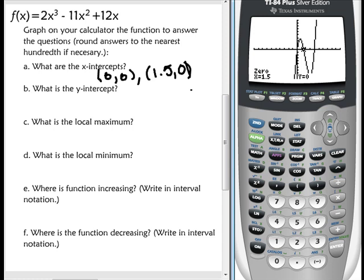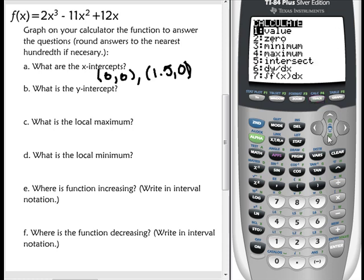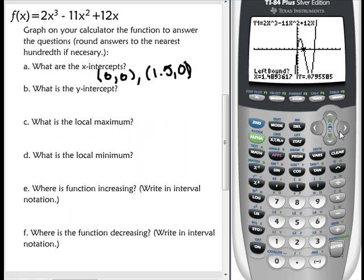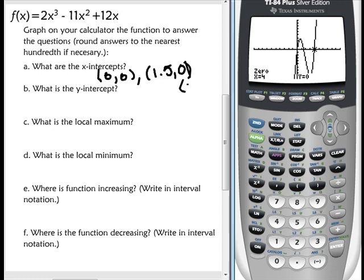And of course, we have one more. So we're going to do 2nd, calc, zero. I'm going to get a little closer here. So this is the left side, and then the right side, and then enter. And that's my next and my last x-intercept. So 4, 0. And once again, you want to write them as ordered pairs and not just numbers.